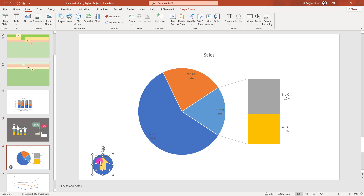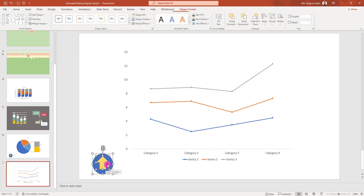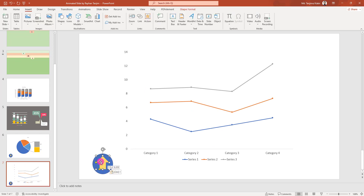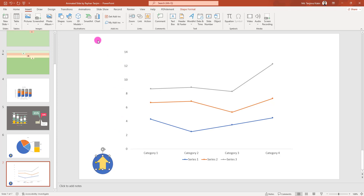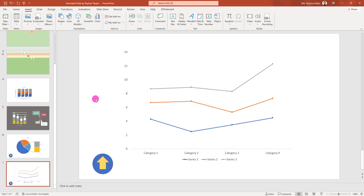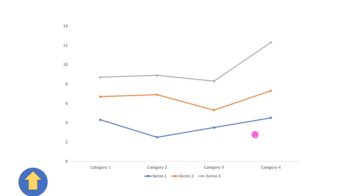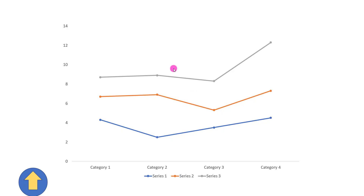Select both shapes, press Ctrl+C to copy, then go to the other slide and press Ctrl+V to paste. Click on the pasted shape and remove the existing link. Then click it again, go to Insert, Link, Place in This Document, select the title slide, and click OK.